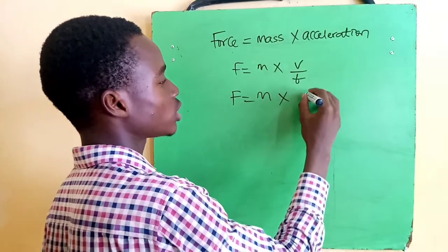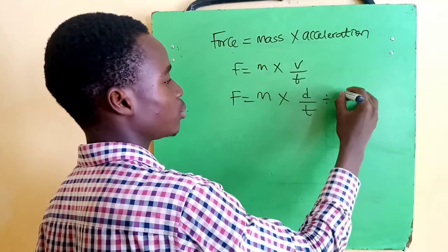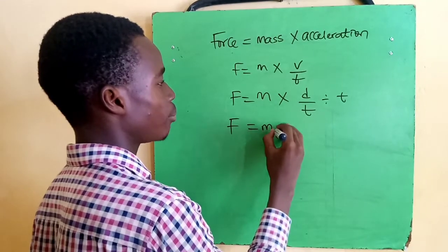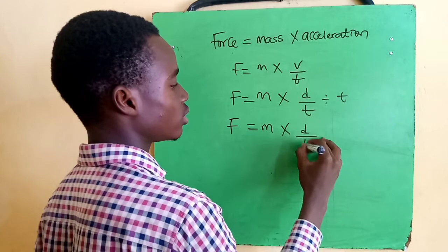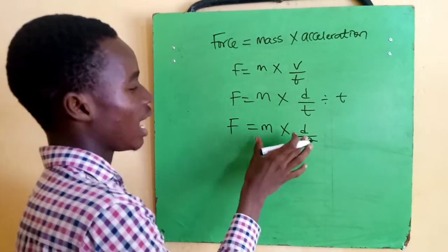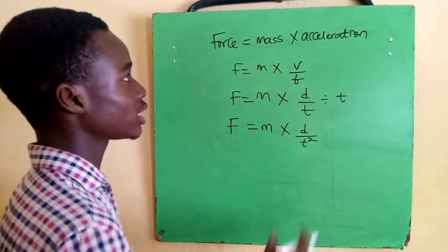Velocity is distance over time, divided by time T. So our force will be equal to mass times distance over T squared. Now each of them are in their fundamental quantities, so you can now translate it to dimension.